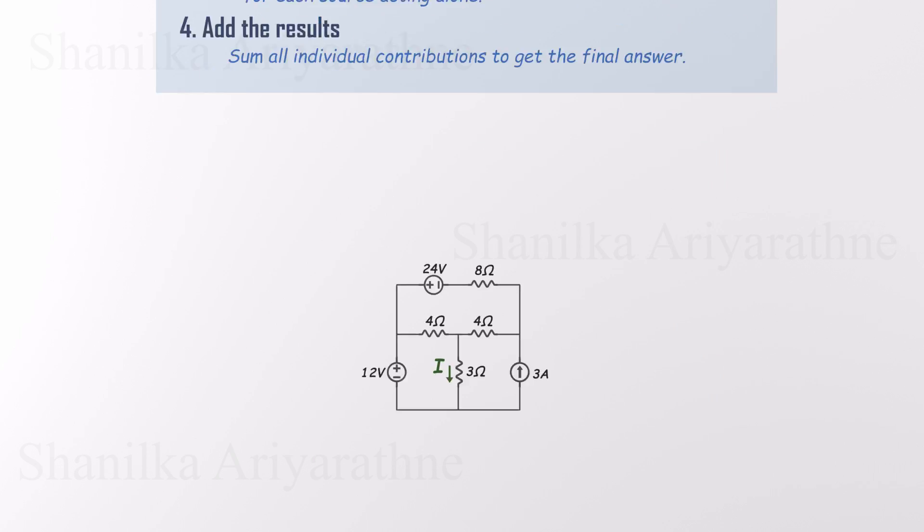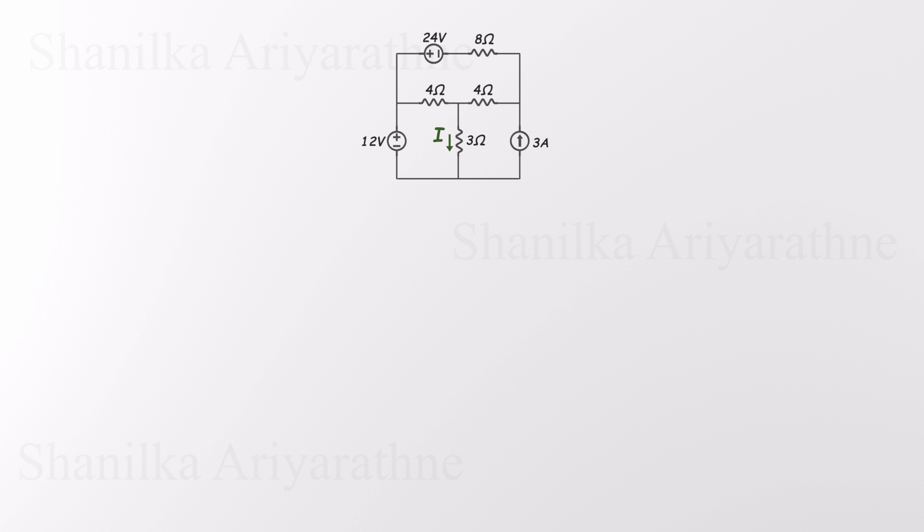Alright, let's move on to the actual example. In this circuit, we've got three independent power sources: two voltage sources and one current source. We'll start by creating a sub-circuit that uses just the 12-volt voltage source. To do that, we need to deactivate the other two sources. As we mentioned earlier, a deactivated voltage source becomes a short circuit, basically a wire with zero voltage across it. A deactivated current source becomes an open circuit. No current can flow through that branch. So after making those changes, we end up with a simplified version of the circuit that includes only the 12-volt source.